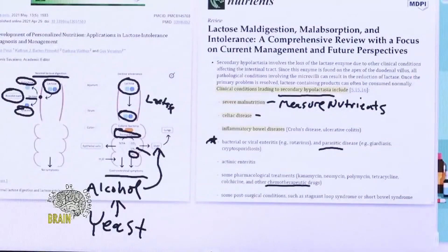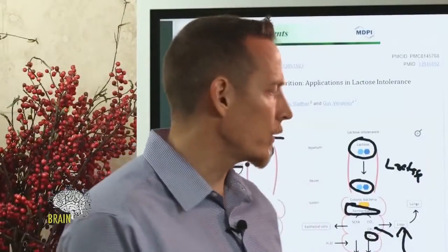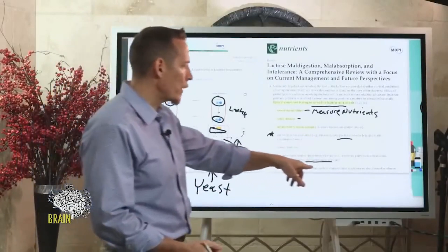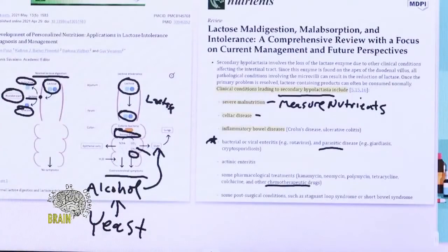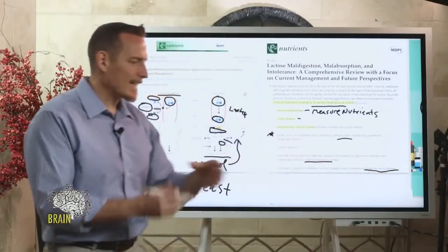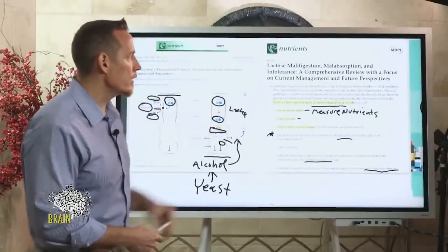Actinic enteritis is another cause. Certain pharmacological treatments — including antibiotics and chemotherapeutic agents — can also be responsible. This is common in people going through cancer treatment, as chemotherapy destroys the lining of the gut and reduces tolerance for certain foods. Antibiotics belong on this list as well. Post-surgical conditions like short bowel syndrome — where part of the bowels have been removed due to chronic inflammatory disease — result in less transit area to digest food, which can lead to intolerance.